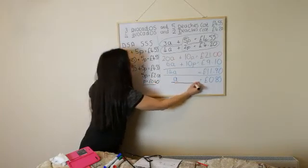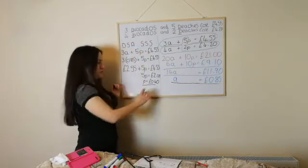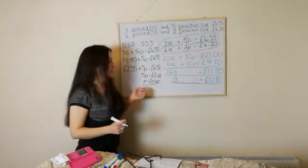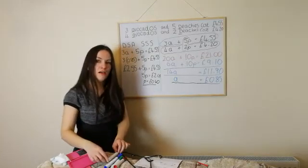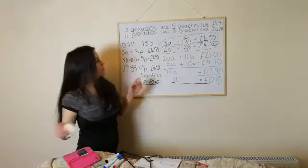So, there we have it. A peach is worth £0.40 and an avocado costs £0.85. Now, that's probably, that's one example. I'm going to use a different example this time.